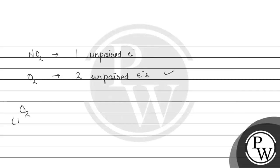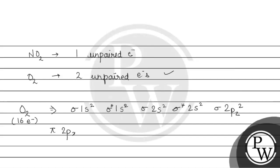O2 में oxygen के 8 electrons होते हैं, तो O2 में 16 electrons हो जाएंगे। Electron configuration: sigma 1s2, sigma* 1s2, sigma 2s2, sigma* 2s2, sigma 2pz2, pi 2px2, pi 2py2, then pi* 2px1, and pi* 2py1।